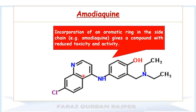This is the chemical structure of amodiaquine. Amodiaquine is synthesized by the substitution of an aromatic ring in the alkylamino side chain. In the structure you may observe that in the side chain at the 4th position we have an aromatic ring, and this aromatic ring is responsible for the activity of amodiaquine. Amodiaquine is a 4-amino-quinoline drug, and its activity and toxicity are less compared to chloroquine.